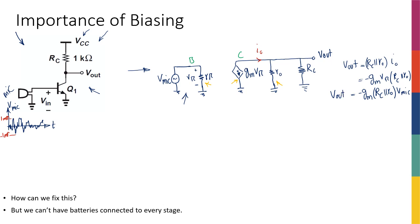So it looks like I get a voltage output v-out that is much bigger than the input v-mic. If I set Rc, r-naught, and gm so that the gain equals 100, I have an amplifier multiplying v-mic by a factor of 100 — a voltage gain of 100. But there is a big problem here: I claim I cannot get a gain as good as 100, not even 10 or even 1.